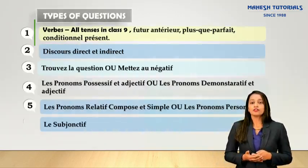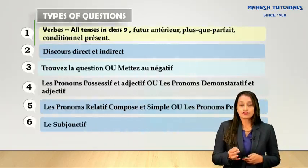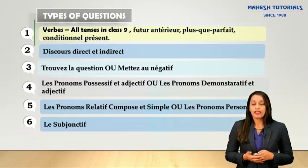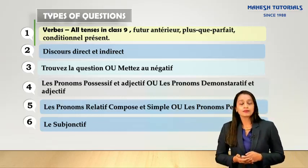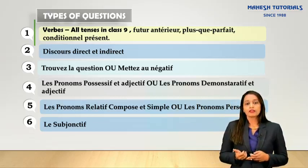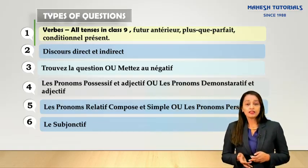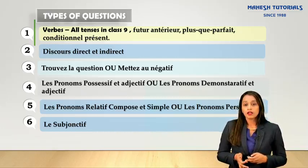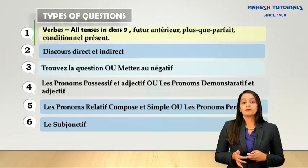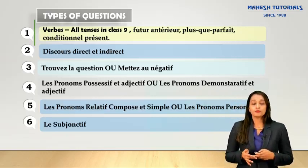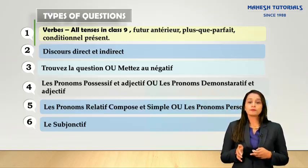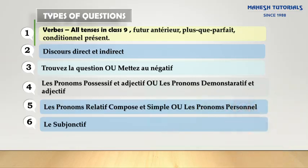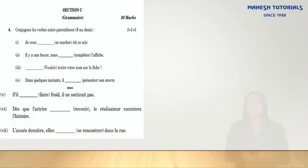Section C consists of grammar for 30 marks. The types of questions asked include verbs and tenses, direct and indirect speech, trouver la question or répondre à la forme négative, pronoms possessifs et démonstratifs, pronoms relatifs composés et pronoms personnels, and lastly le subjonctif.